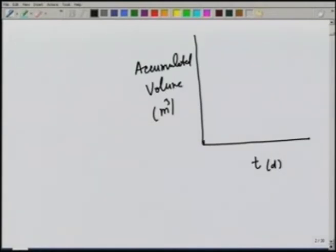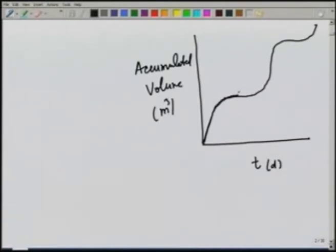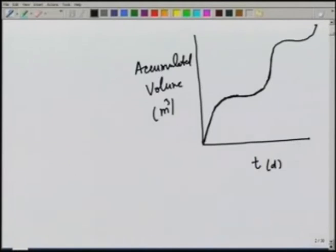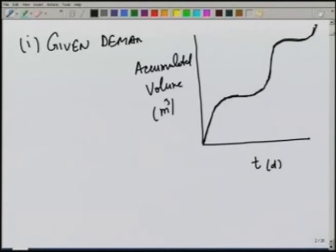The mass curve looks like this: when the volume is increasing at a very fast rate, the discharge in the stream is high. During dry periods the mass is increasing at a very slow rate, indicating small discharge. Over this period we can see ridges and valleys in the curve. In order to find out the maintainable demand, there are really two kinds of problems we can solve: one is given demand, find storage; and the second, for a given storage, find the maintainable demand.